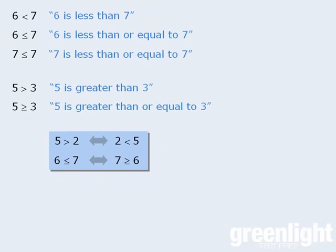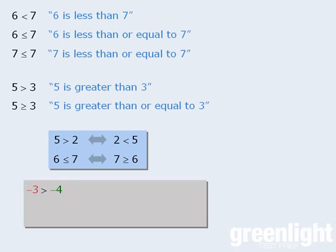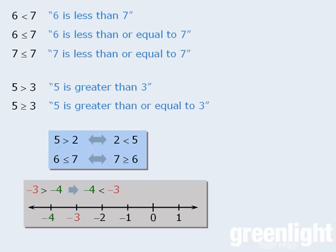I happen to be partial to taking inequalities and rewriting them so that the inequality sign opens to the right. This way, the smaller number is always to the left of the larger number, in the same way that they appear on the number line.